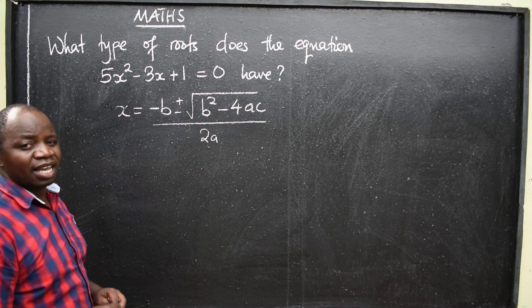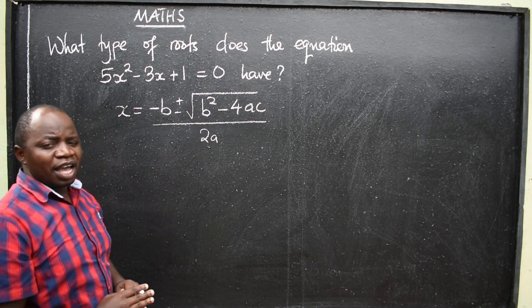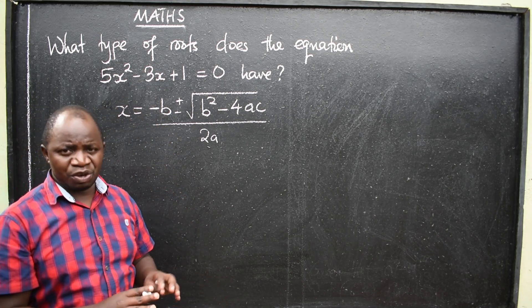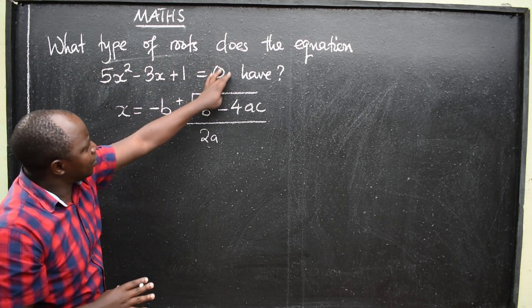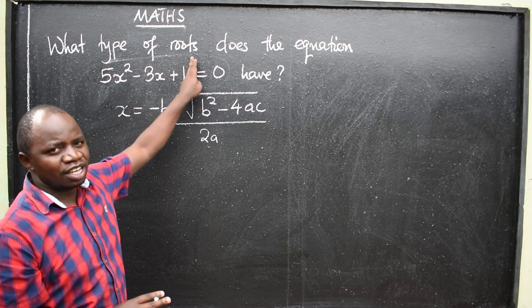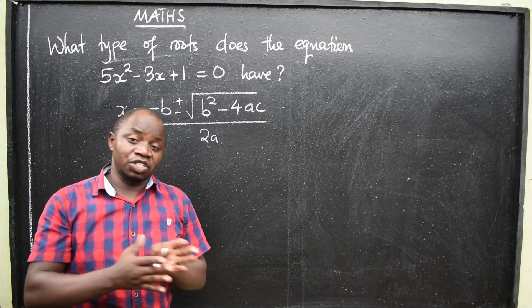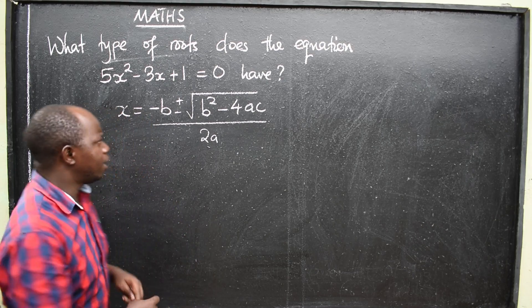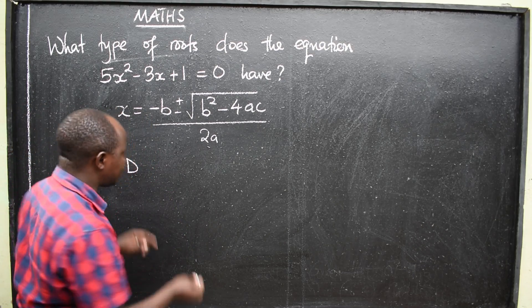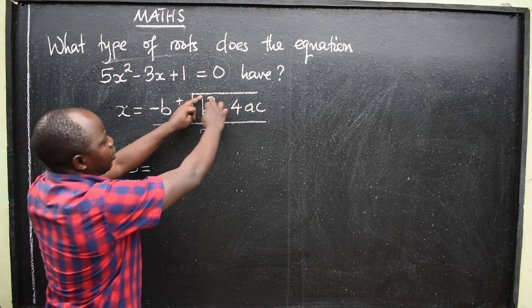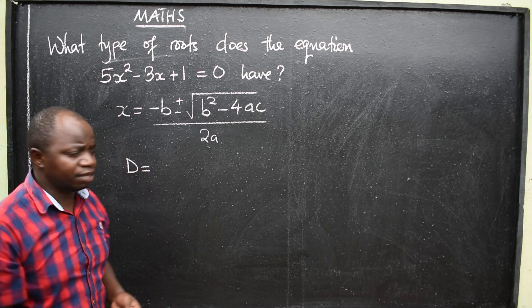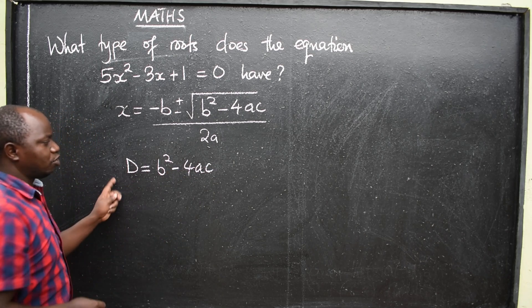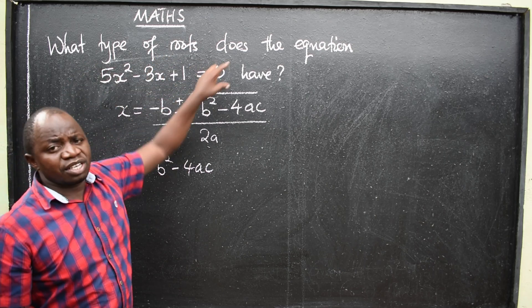This is the quadratic formula. From this quadratic formula, we are going to generate what we call the discriminant of a quadratic equation. To get the roots, we need to find its discriminant. It is the discriminant that will tell us the type of roots that this equation has. We say d, standing for discriminant, is always equal to what you have inside the square root — that is b squared minus 4ac.